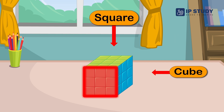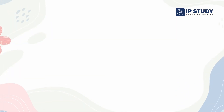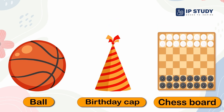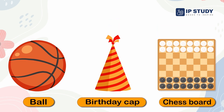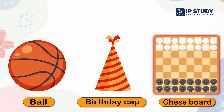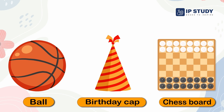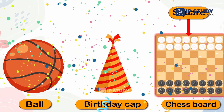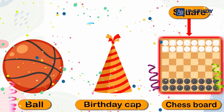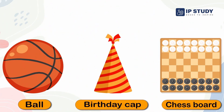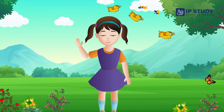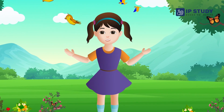Now can you tell me which of these shapes is a square — a ball, a birthday cap, or a chess board? That's right — the chess board shape is a square. Objects can also be compared using the rectangle shape. We will learn about this when we meet again — till then, bye!